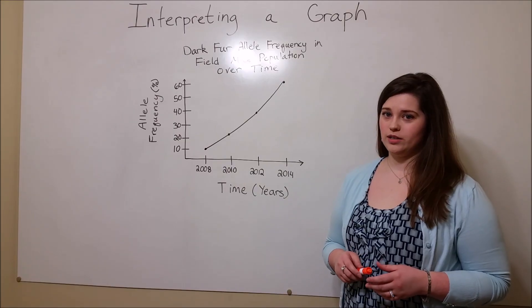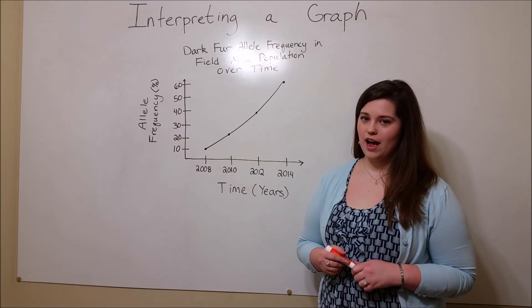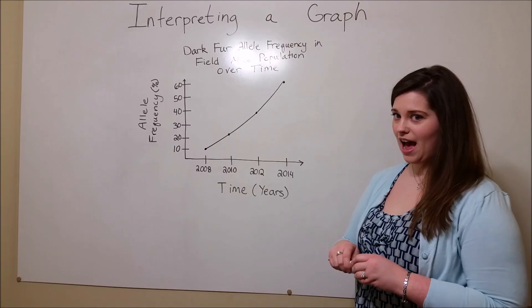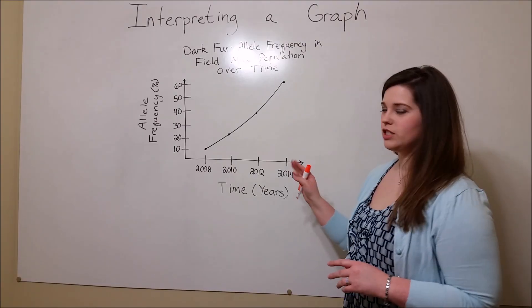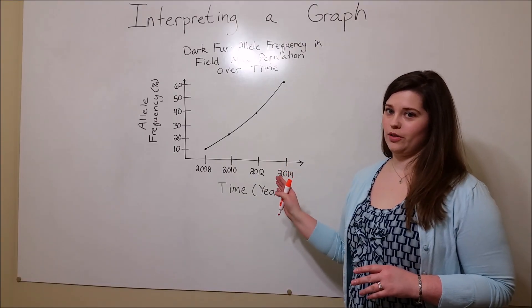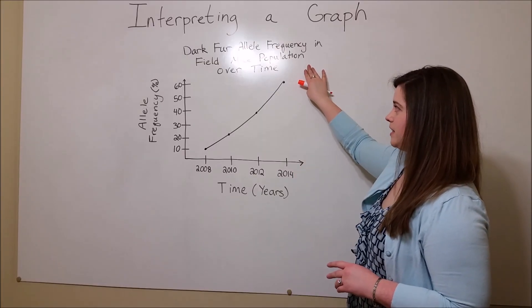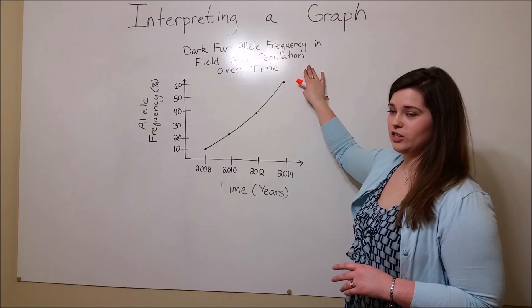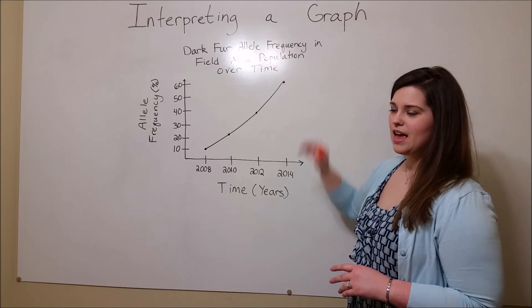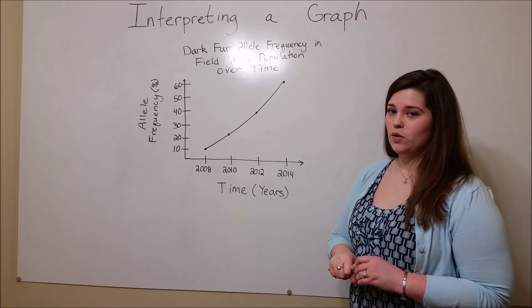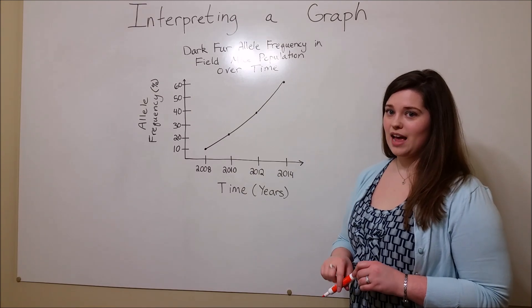First, let's look at the parts of a graph. Every graph, if done correctly, should have a title. The title should describe what is shown on the graph. In this case, the dark fur allele frequency in a field mouse population over time. Every graph should also have appropriately labeled axes.